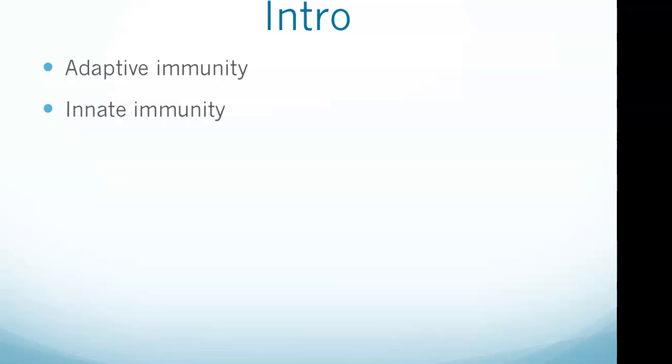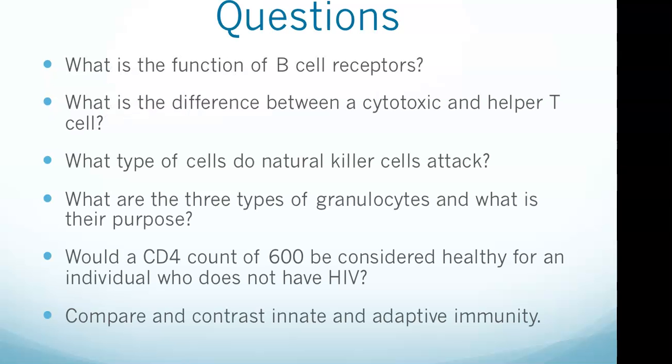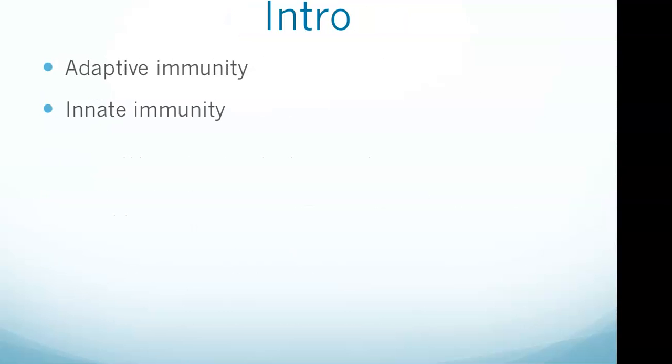Innate immunity, on the other hand, is quick to respond, is not specific to individual pathogens, and it does not form memory cells. Some examples of innate immunity are macrophages, natural killer cells, and the granulocytes. You need to be familiar with everything we just went over - all those can be parts of multiple choice questions.